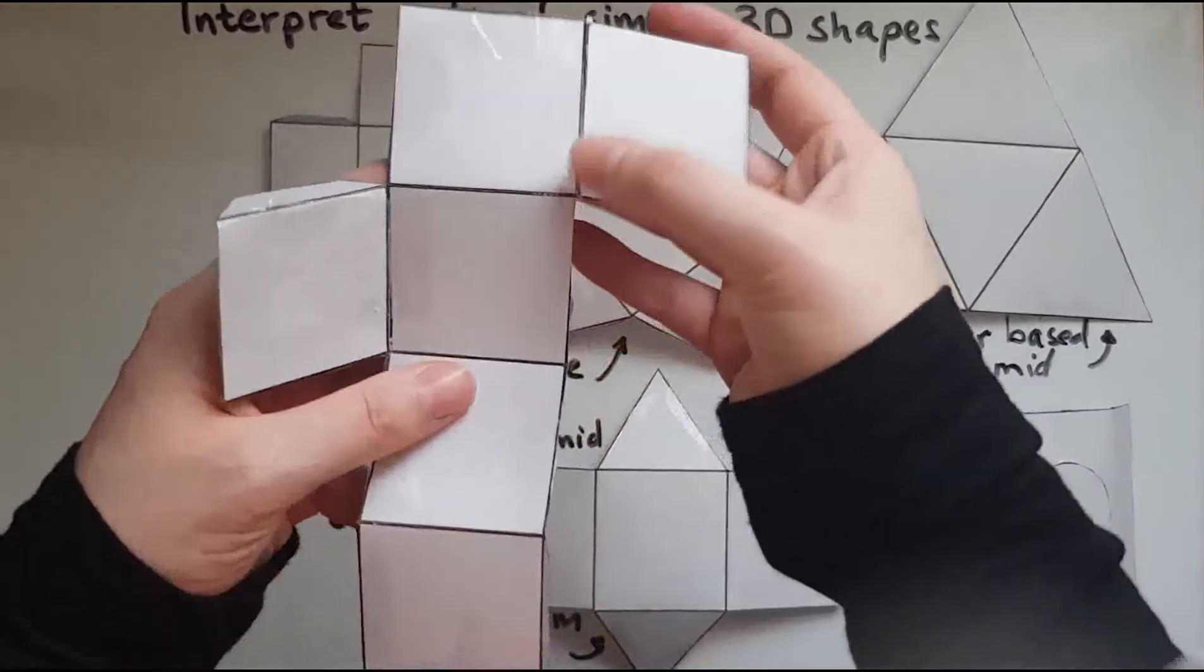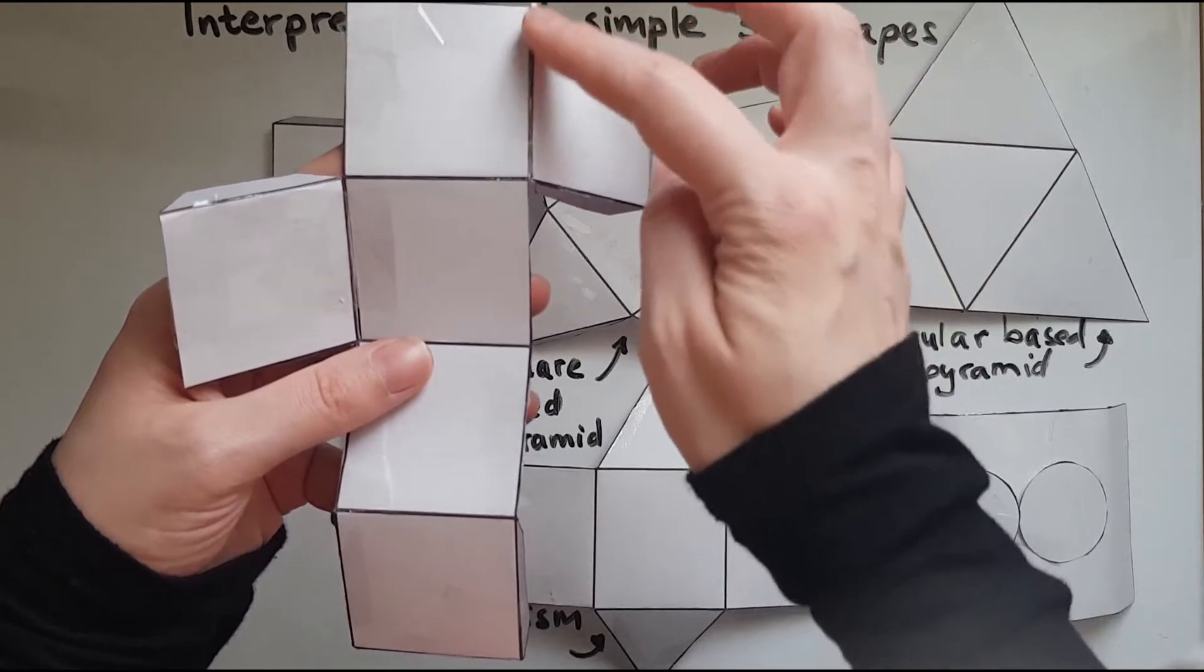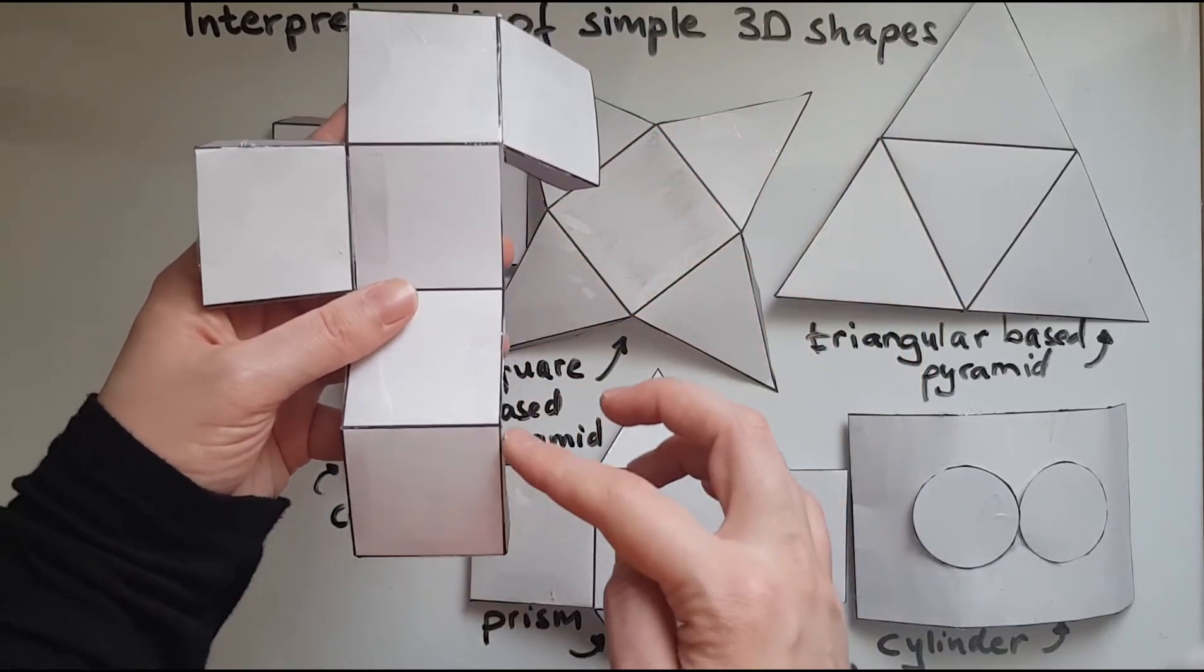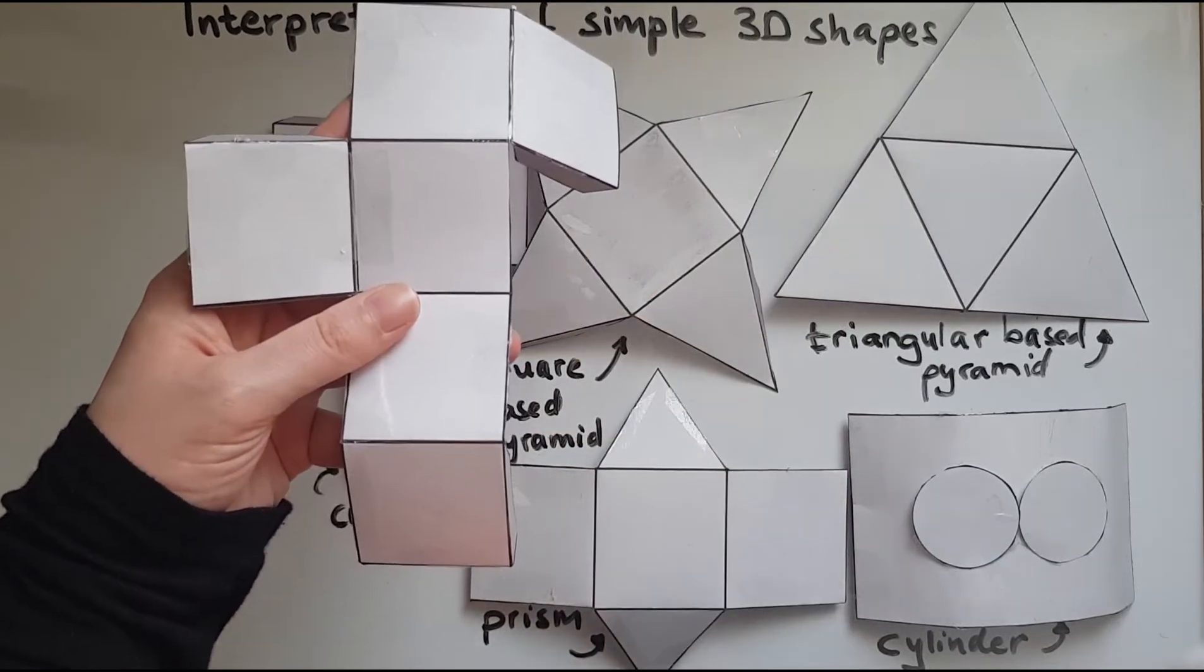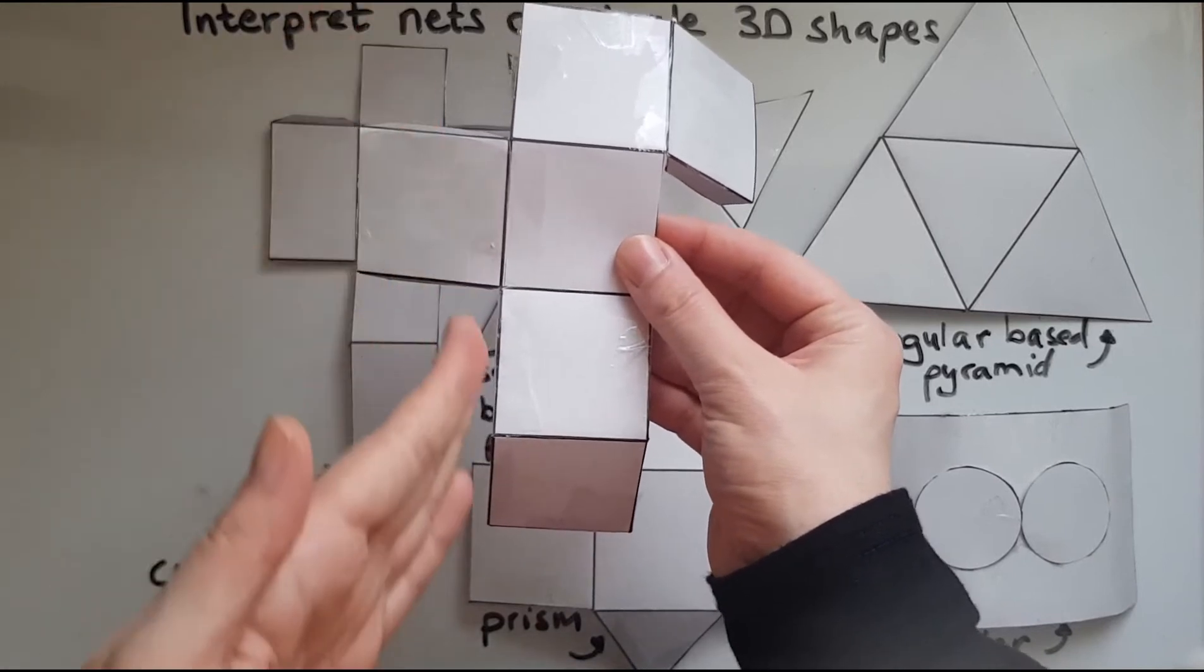And again if I try and bring this all together it still makes a cube as you can see. So it does not matter whether this face on the side is stuck here, here, here or here. So it can be any of these sides.